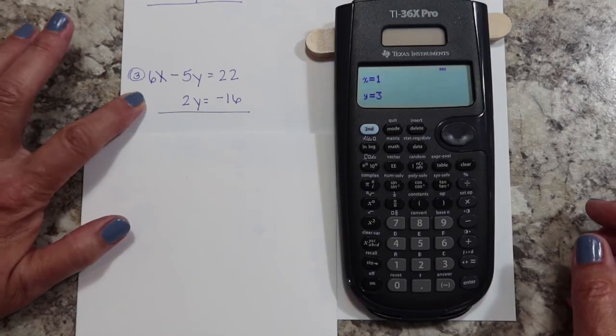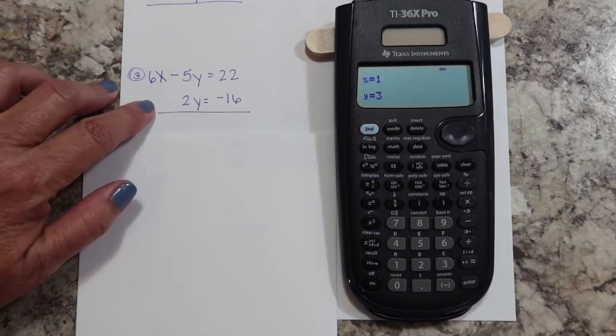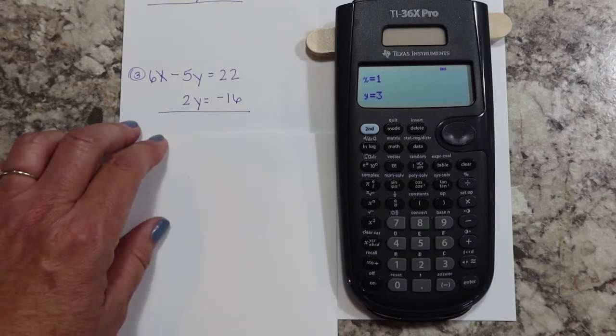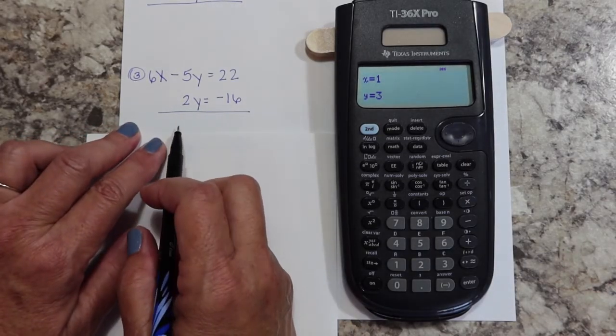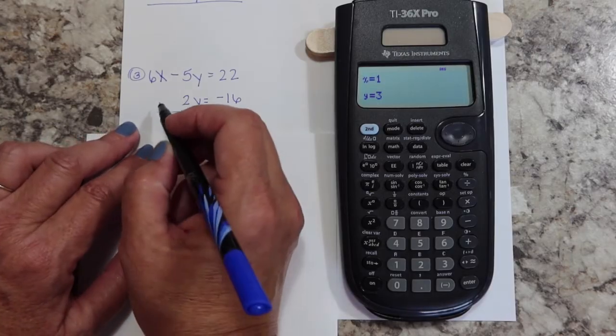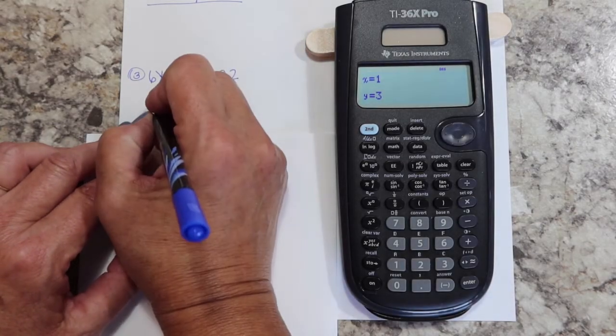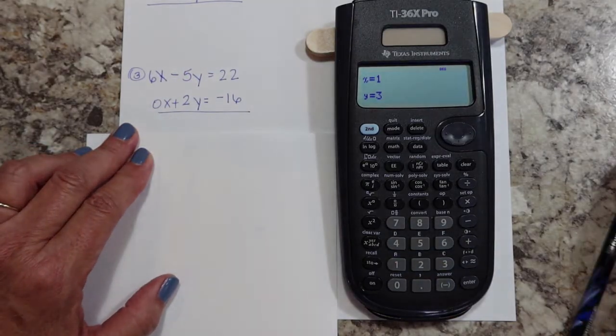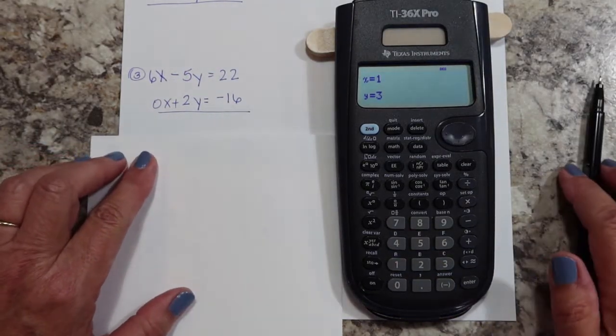Now let's look at another system. The problem with this one is I do not have an X term. You have to put something in. So if there is not a variable at all—now if there is a variable, your coefficient is one—but there's not a variable at all here, so you just insert zero X. That's going to be your coefficient. Now let's put it in the calculator.